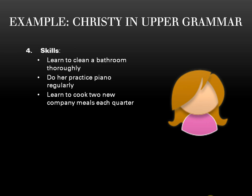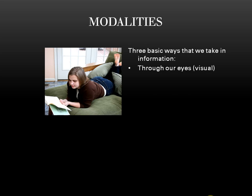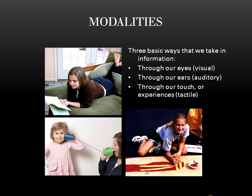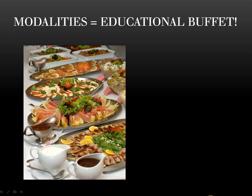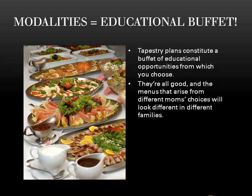Now having put first things first, we're ready to begin planning using Tapestry materials. Let's start with taking a close look at what educators call modalities, which are the ways that people take in information. Basically, there are three ways that human beings learn: through their eyes — visual; through their ears — auditory; and through their touch or experiences — tactile. Thinking about modalities while planning using Tapestry materials and purposefully mixing them up within our units keeps school fresh and varied and helps us make choices between Tapestry suggestions more easily.